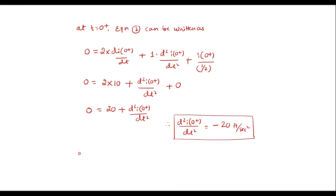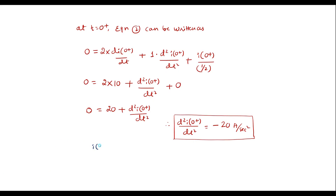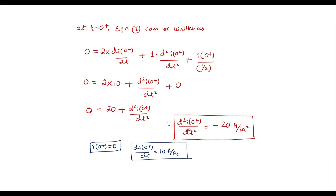Thus, we found all parameters: i of 0 plus is equal to 0; di of 0 plus by dt is equal to 10 amperes per second; and d square i of 0 plus by dt square is equal to minus 20 amperes per second square.